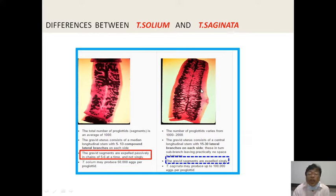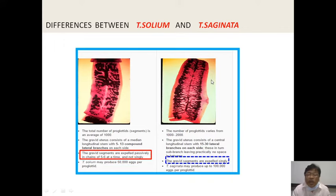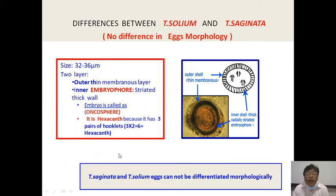Differentiating Taenia solium from Taenia saginata clinically: Taenia solium — the patient complains of passing proglottid segments passively in chains of 5 to 6 in a cluster. Taenia saginata — the patient finds a single segment coming actively in stool. Egg morphology cannot differentiate the two species. One should know what an oncosphere embryo looks like for diagnosis.